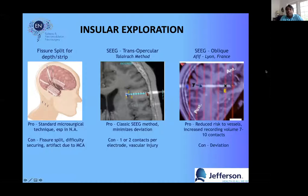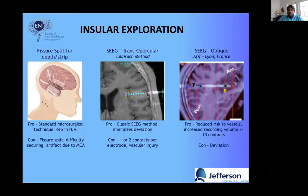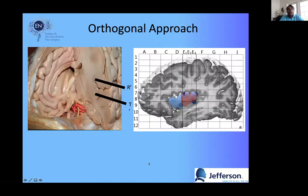Both approaches are published and shown to be very safe. They differ in how many contacts are actually in the insula and the amount of deviation. For 2-3 cm depth trans-opercular implantations, deviation is clearly less. For 8-10 cm or longer oblique implantations, deviation on the SEEG can be 3-4 mm, which when traversing multiple pial planes could be an issue. Our preferred approach at Thomas Jefferson is the oblique approach.